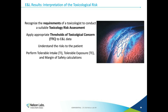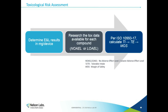As the toxicologist goes through this process, we need to derive tolerable intakes and tolerable exposures per ISO 10993-17. The chemistry results come in, and for each compound above the AET — correlated to a threshold of toxicological concern — it needs to be determined whether that level is a problem. For each of those compounds, we research and identify NOELs or LOELs and calculate an acceptable level based on that.